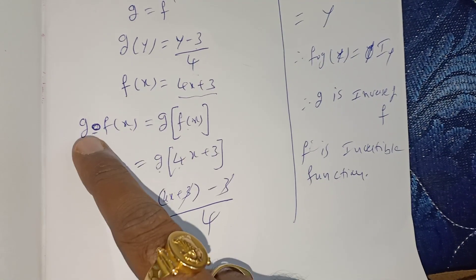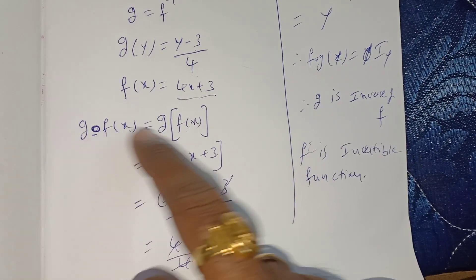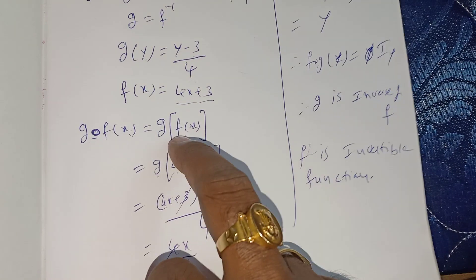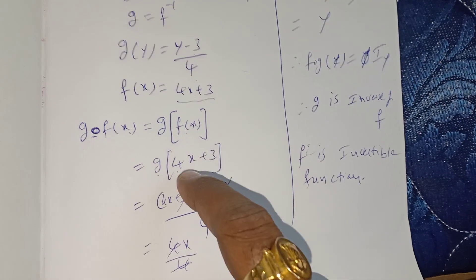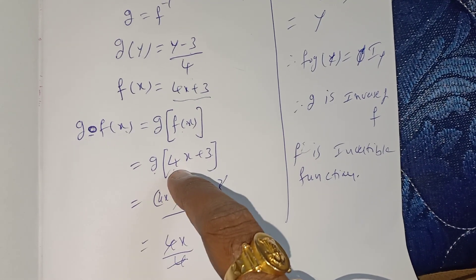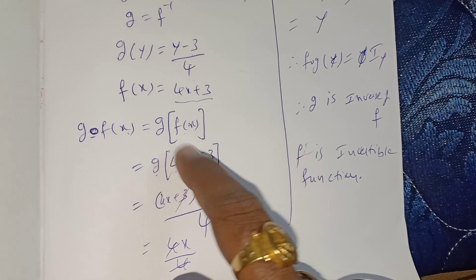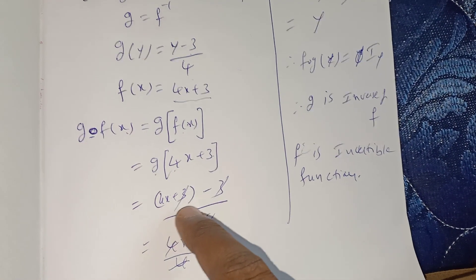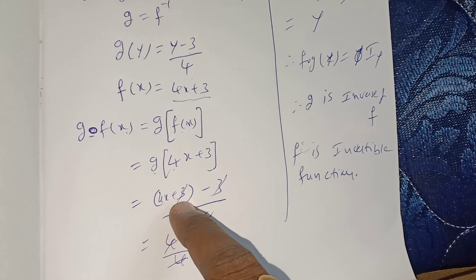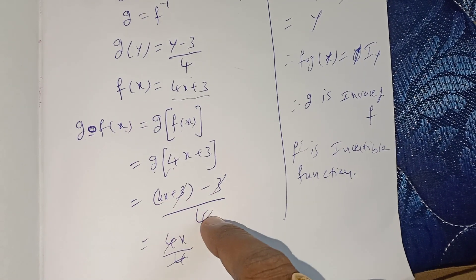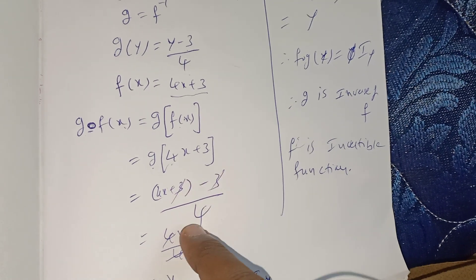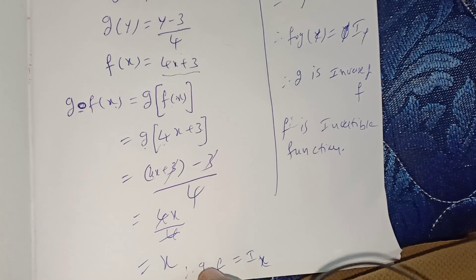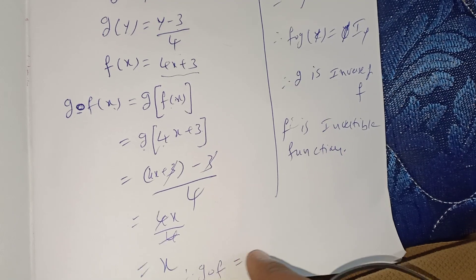Consider g∘f(x): g(f(x)). In place of f(x) substitute 4x + 3. g(y) = (y - 3)/4, so in place of y substitute 4x + 3: (4x + 3 - 3)/4. The 3s cancel, 4x/4, the 4s cancel, giving x. Therefore g∘f = Iₓ.